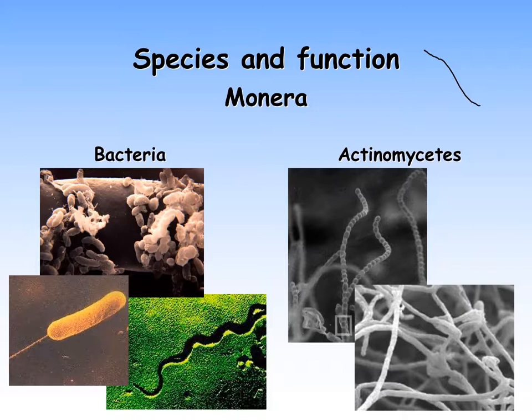The actinomycetes, like fungi, are filamentous bacteria but they look like fungi. Their filaments are often highly branched. Actinomycetes are also able to degrade complex organic compounds such as cellulose, lignin, and chitin. They tend to be most active in the final stage of decay. Actinomycetes are often abundant in humus-rich soil; they release compounds known as geosmins that account for the earthy aroma of freshly tilled land, or the aroma we smell from the soil when it starts to rain.